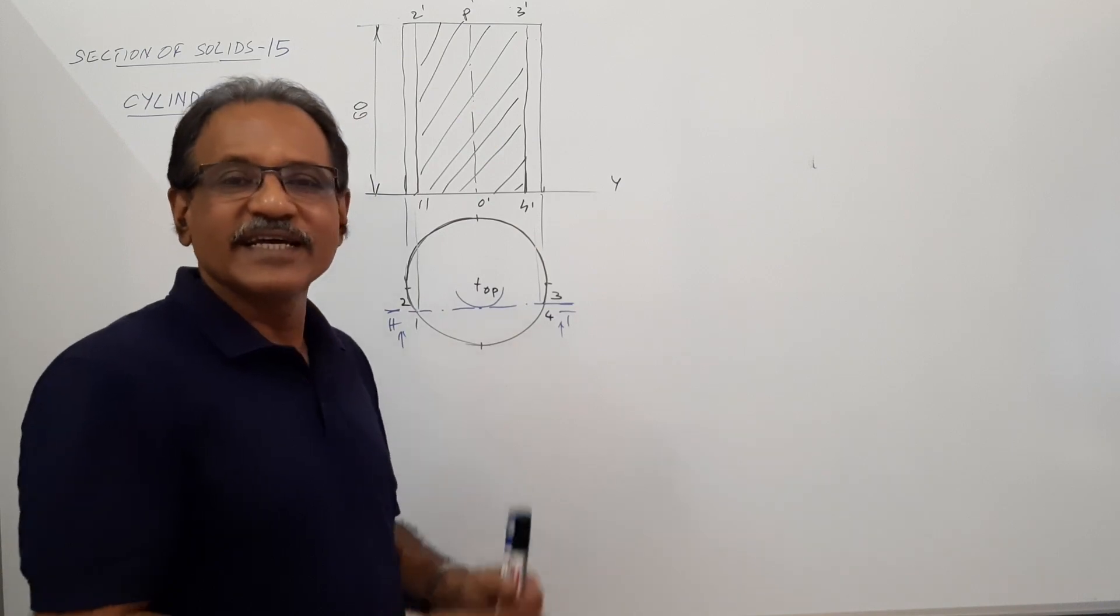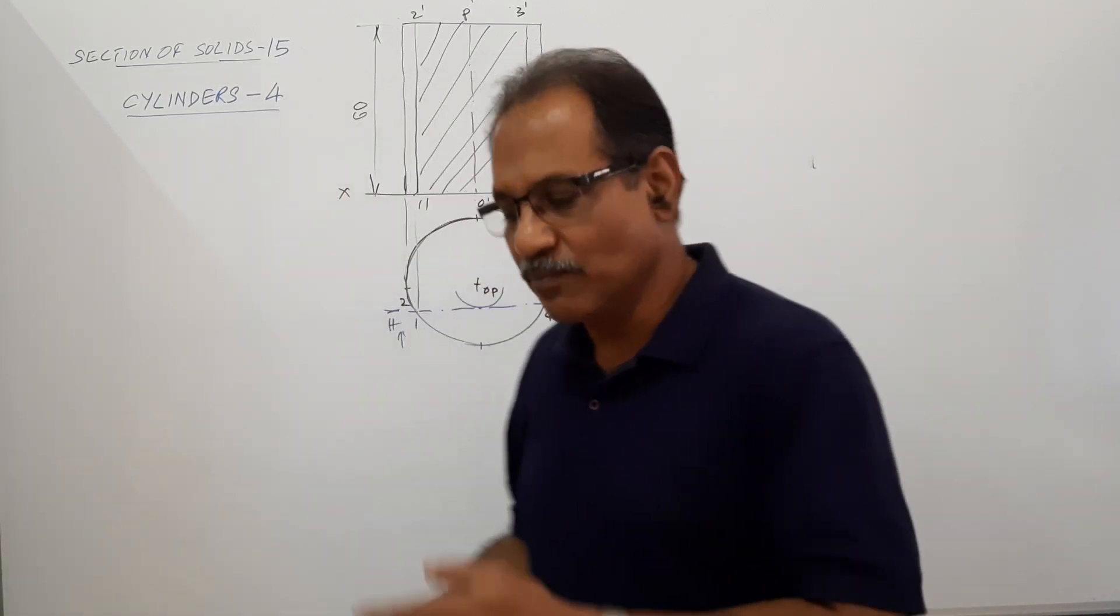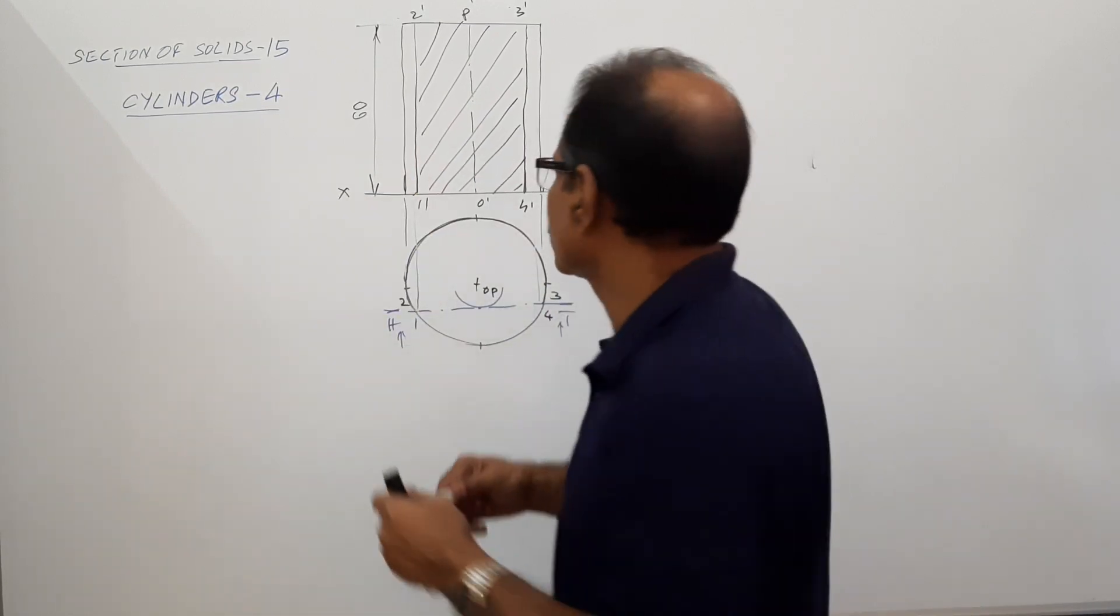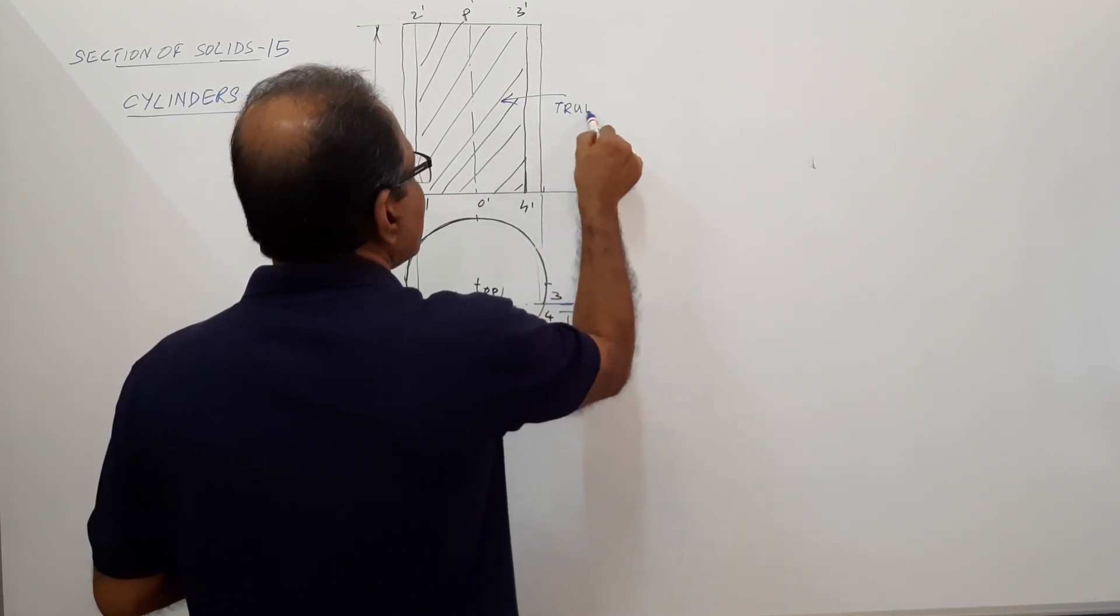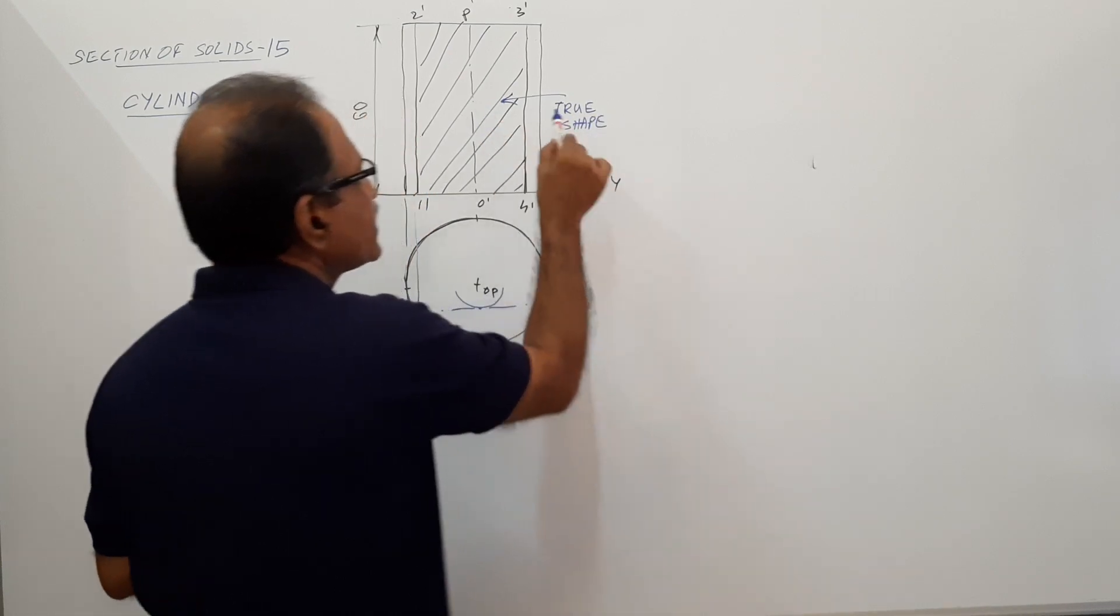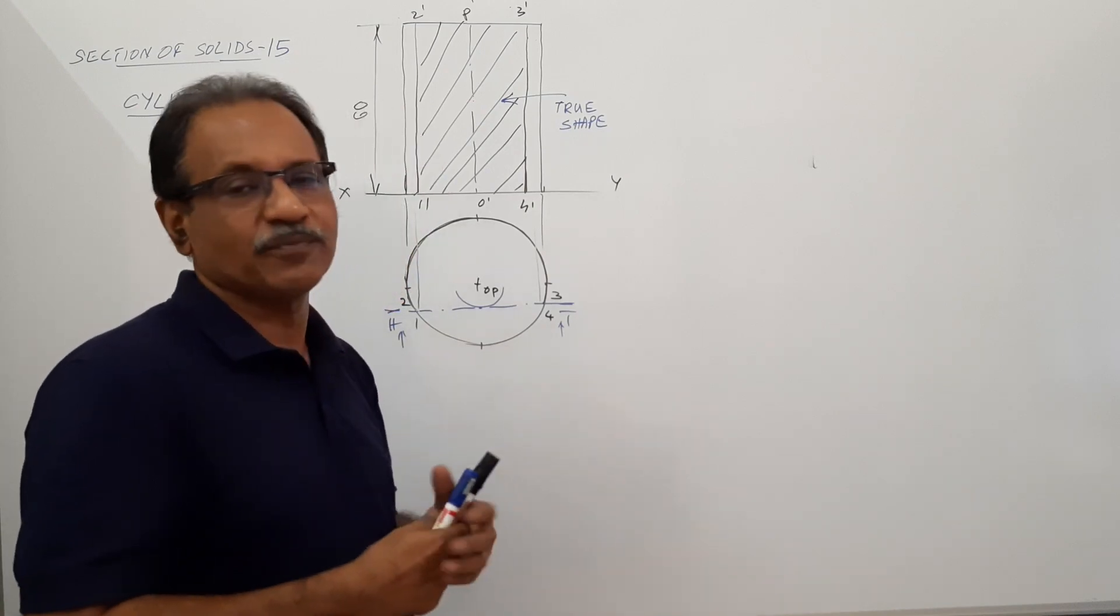There is no need of a true shape. Why there is no need of a true shape? Since the cutting plane is parallel to VP, the sectional elevation itself gives true shape. So you can say true shape. If somebody asks in the examination, draw the true shape, you can draw this and put an arrow and write true shape. That is sufficient. You need not draw an additional true shape here.